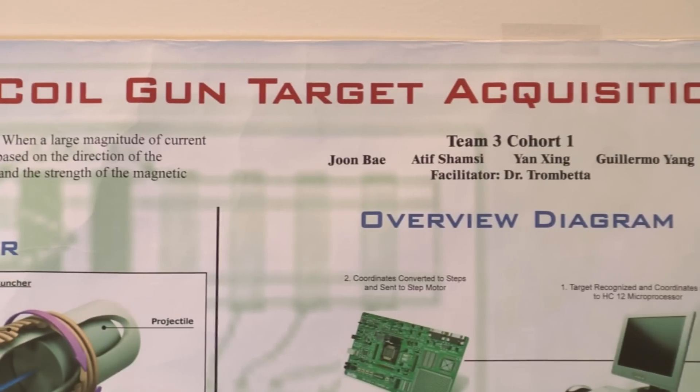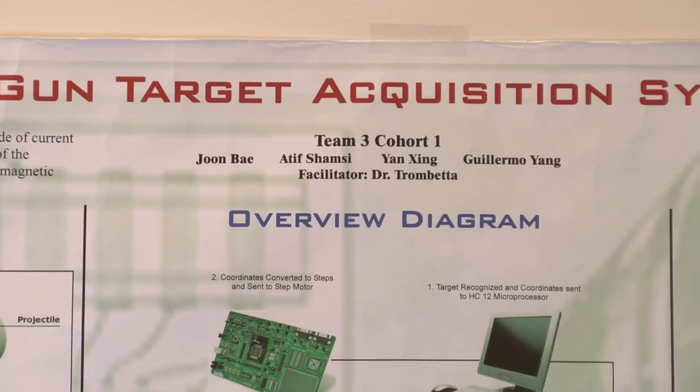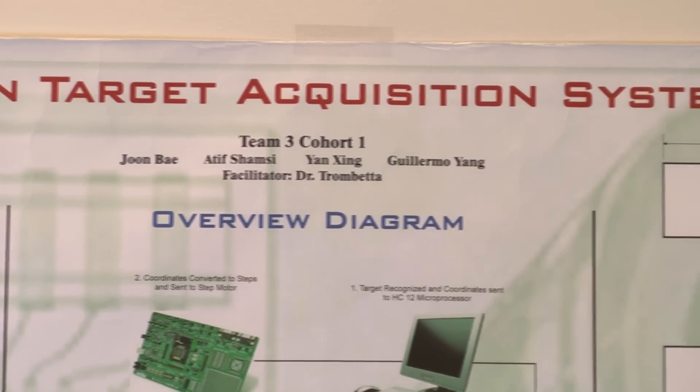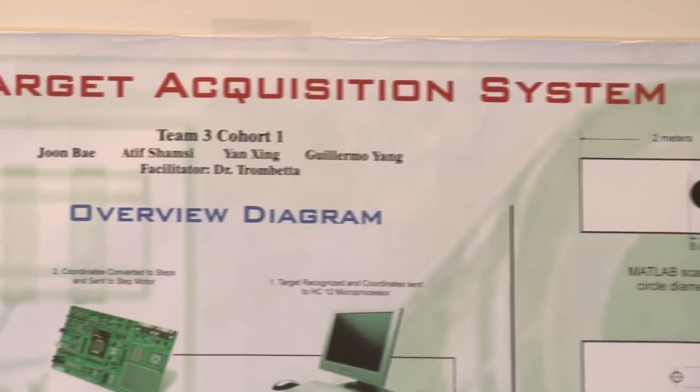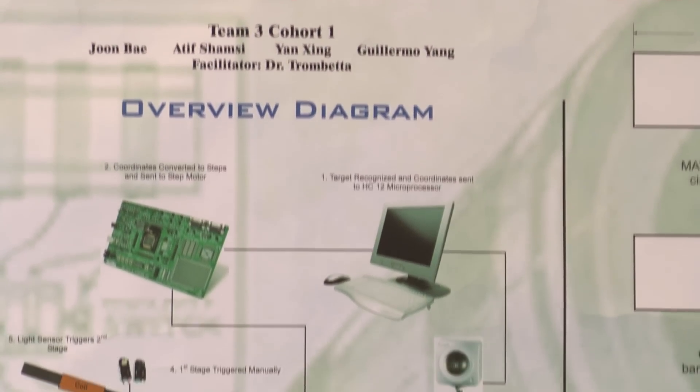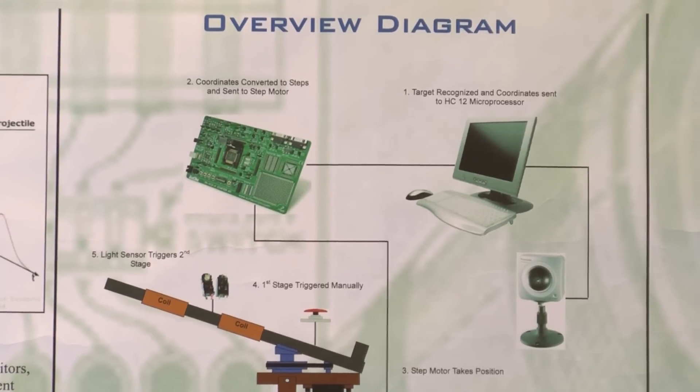So here's an example of a poster that does a good job at that. We first see the title at the top and it says Coil Gun Target Acquisition System and it has the team who made it, and then we have the overview diagram right in the middle.